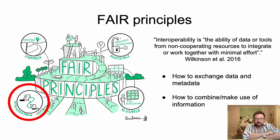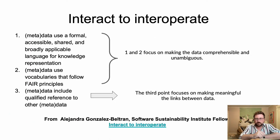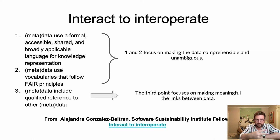Interoperability is essentially the intentional ability to exchange data and metadata and help facilitating, combining, or making use of this information. The concept of interoperability was defined and structured by Wilkinson et al. in 2016 as the following: one, metadata or data should use a formal, accessible, shared, and broadly applicable language for knowledge representation; two, the same metadata should use vocabularies that follow FAIR principles; and three, metadata or data should include qualified references to other metadata.